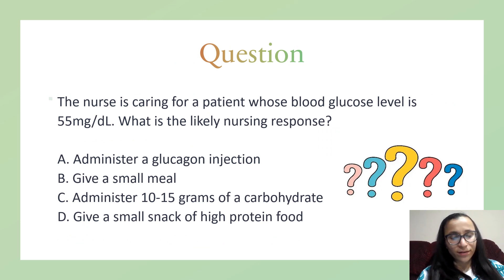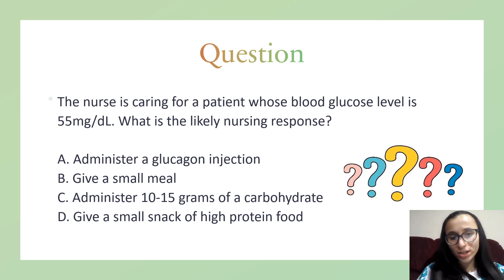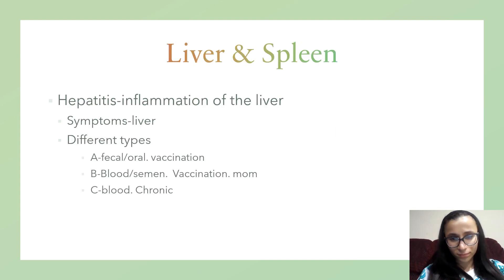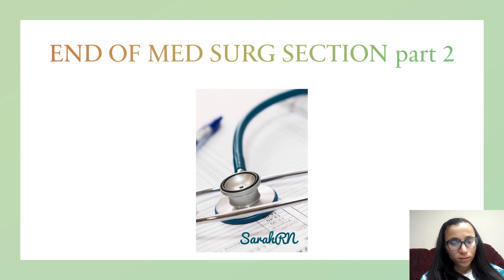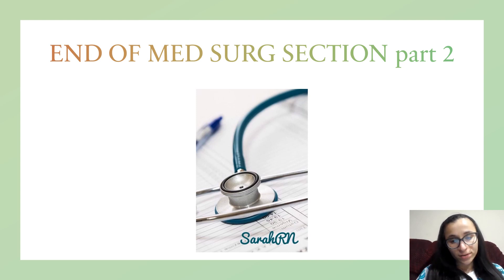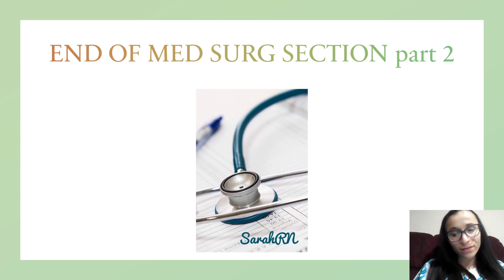Practice question: a patient's blood glucose is 55 — what is the likely nursing response? Give them 10 to 15 grams of carbohydrates. If they're unconscious, then give glucagon. That's the end of med-surg section part two. There will be one more part to complete med-surg. For PDF notes or any NCLEX series videos, visit my website at www.sarahwithanhrn.com — the link is in the description. Email or comment with questions and stay tuned for the next one.